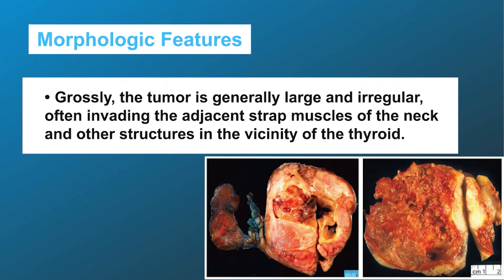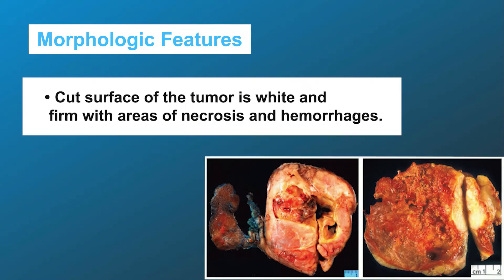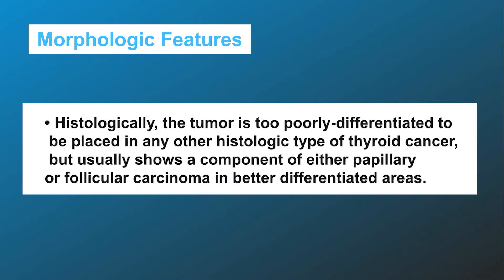Morphologic features — grossly, the tumor is generally large and irregular, often invading the adjacent strap muscles of the neck and other structures in the vicinity of the thyroid. The cut surface of the tumor is white and firm with areas of necrosis and hemorrhages.